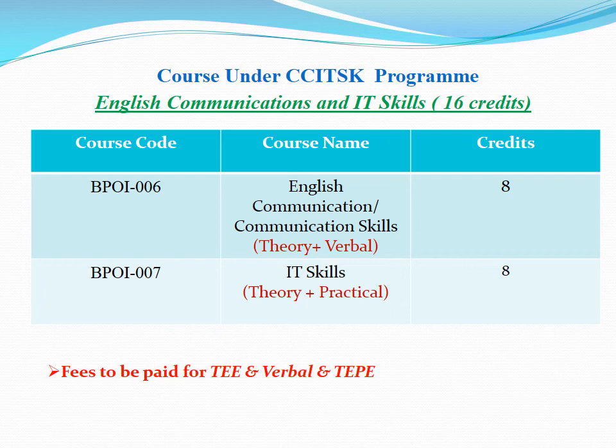Courses under the CCITSK program: English Communication and IT Skills carries 16 credits. BPI-006 English Communication Skills has 8 credits, and BPI-007 IT Skills has 8 credits.